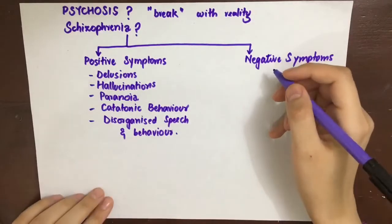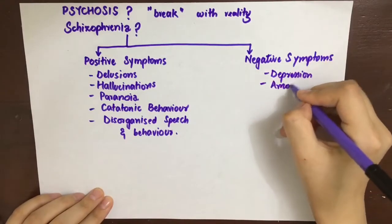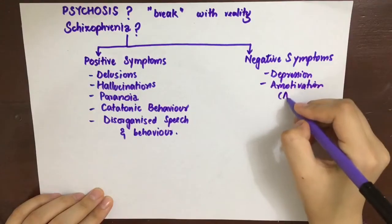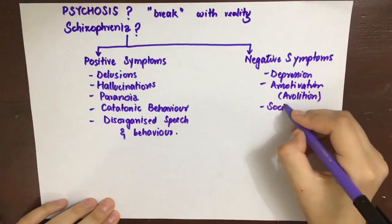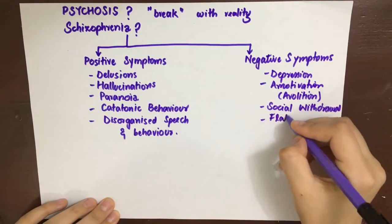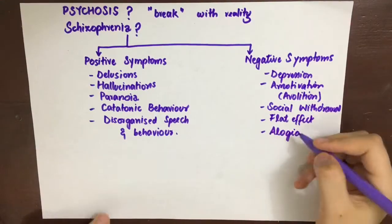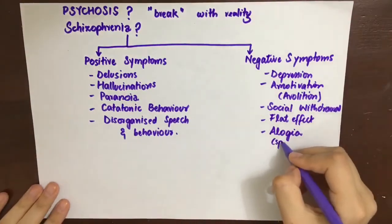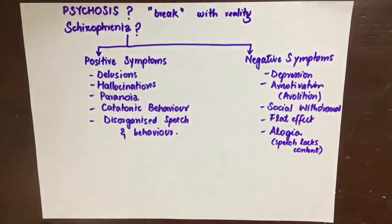The negative symptoms or depressive symptoms will include depression, avolition — that is a decreased motivation to do anything — social withdrawal, where these patients spend most of their time alone. They have a flat affect, meaning these patients don't have a reaction to unusual stimuli; for example, even if they see a snake they won't react. There can also be alogia, or poverty of speech, where their speech will lack content.